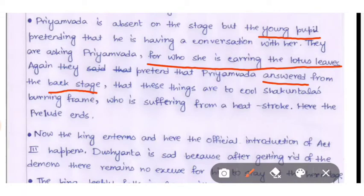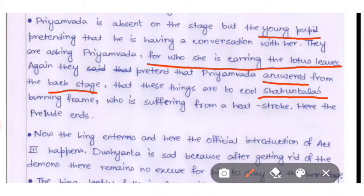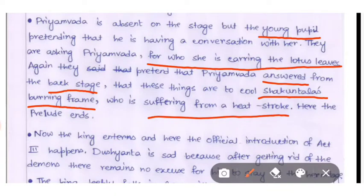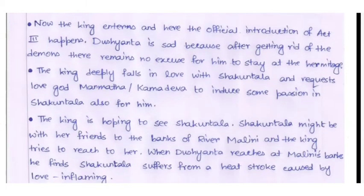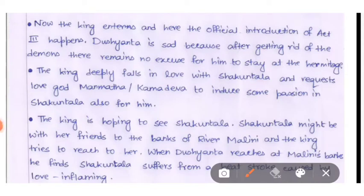The lotus leaves are to cool Shakuntala's burning frame, as she is suffering from a heat stroke. So Priyambada is carrying the lotus leaves for Shakuntala's heat stroke. Here the prelude ends. The prelude is not directly linked with the main drama.